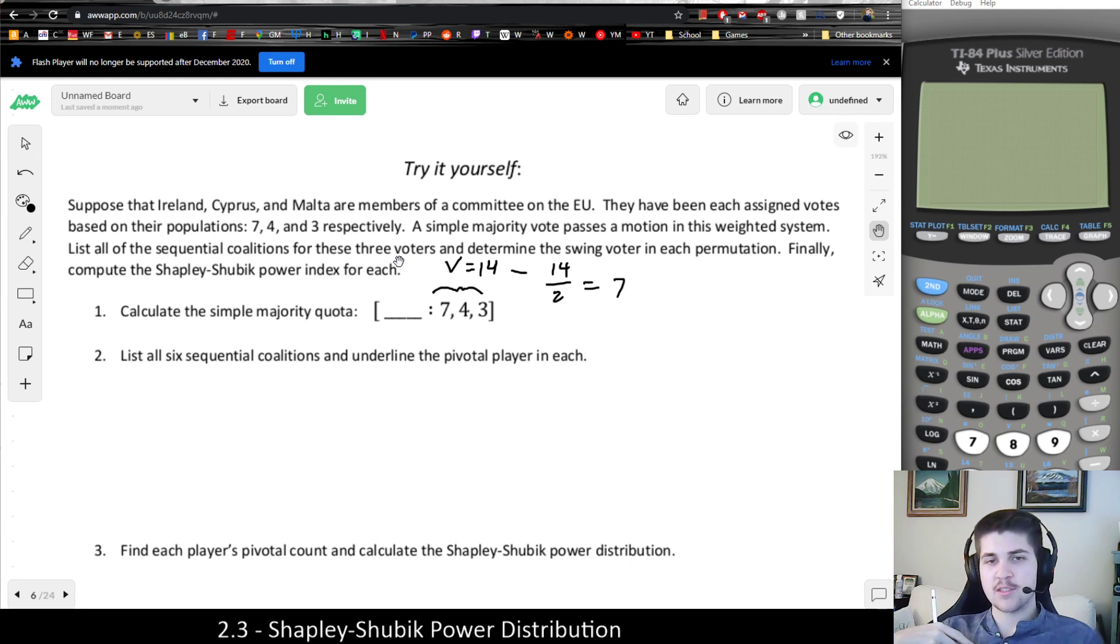And remember, a simple majority is always greater than V over 2, which would have to be 8, because we always round up when it comes to, or we always add 1 if it is round when it comes to simple majority. And there would be a problem if we did not add 1, which would lead to anarchy as we described before.